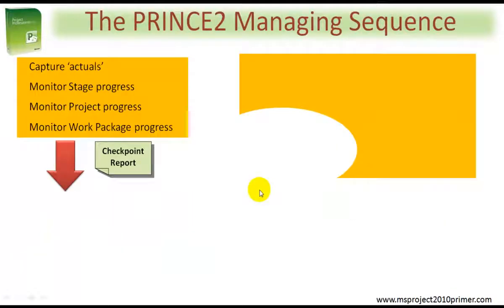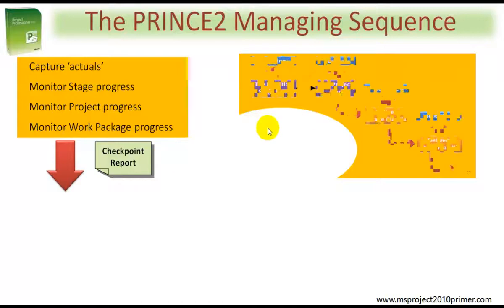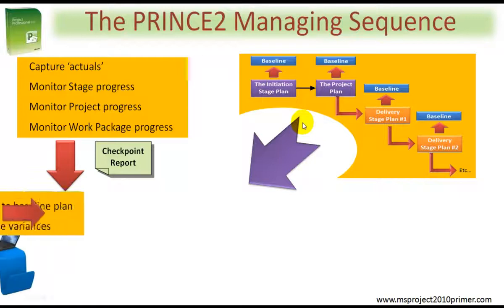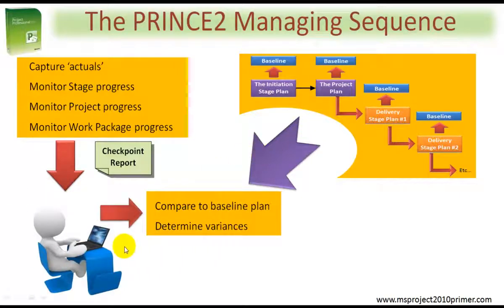Taking a quick look at the managing sequence, the project manager, once the plan has been approved, is there to catch what has actually occurred — at stage level, at project level, and within each stage at the work package level. The checkpoint report is a valuable input here when using the PRINCE2 method. The project manager's challenge is to compare actual information against the baseline plan so that he or she can determine the variances.